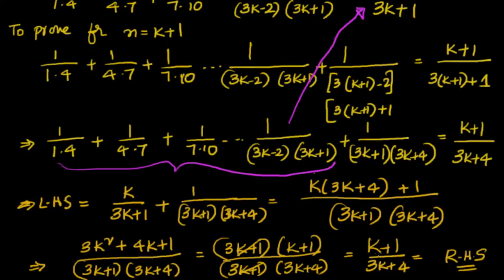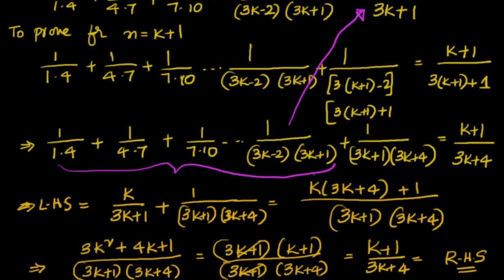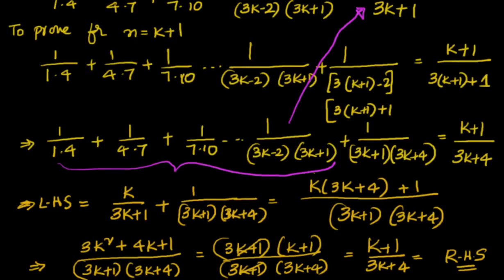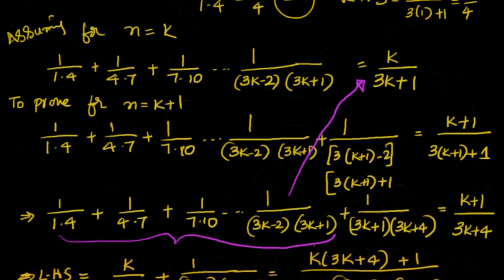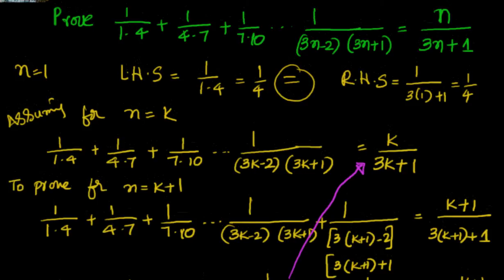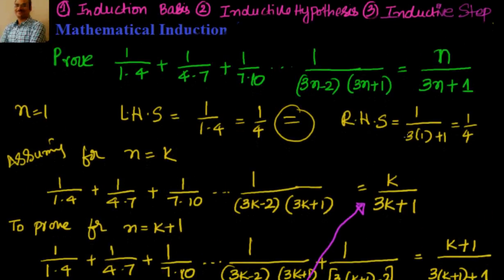Substituting n=k+1, this is nothing but n/(3n+1). We have proven LHS equals RHS for n=k+1. Therefore, the statement is true for any natural number n, and we conclude that 1/(1·4) + 1/(4·7) + 1/(7·10) + ... up to n terms equals n/(3n+1).